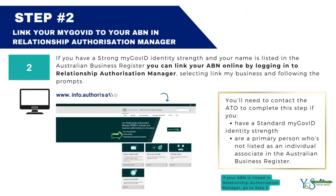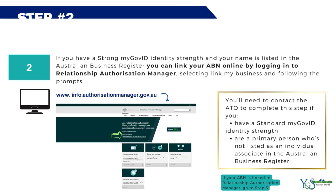Step two — link your MyGovID to your ABN in Relationship Authorization Manager. If you have a strong MyGovID, go to www.info.authorizationmanager.gov.au and log in. After that, select 'Link your Business' and follow the instructions. You will need to contact the ATO to complete this step if you have a standard MyGovID, or if you are a principal person who is not listed as an individual associated in the Australian Business Register.